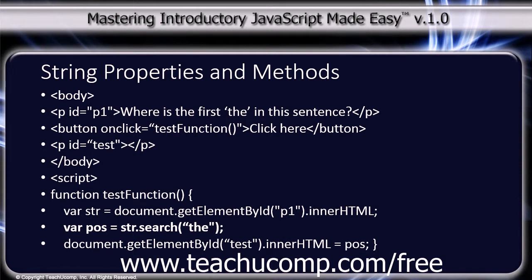document.getElementById('test').innerHTML equals pos; semicolon. Close curly bracket. The close script tag.